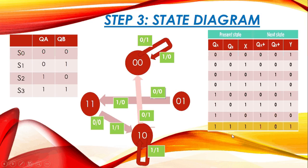For state S3(11): if input X=0, the next state is 10 and output Y=0, giving transition 0/0. If input X=1, the next state is also 10 and output Y=1, giving transition 1/1. That covers all transitions in the state diagram for the analysis of this clocked sequential circuit.